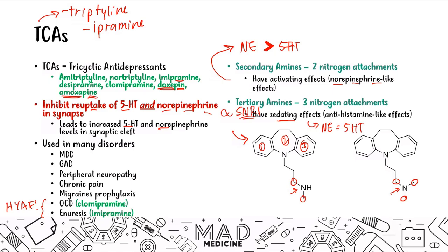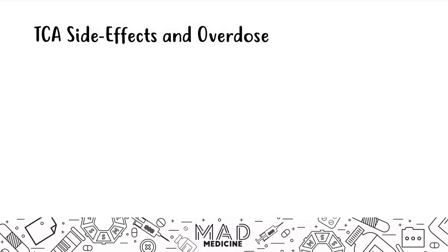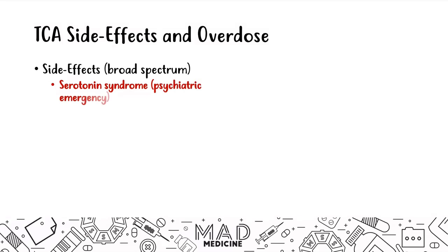TCA side effects are very broad spectrum because they have multiple effects on the body. The first side effect common to many antidepressants is serotonin syndrome, which is a psychiatric emergency. This is usually due to an increased amount of serotonin left in the synaptic cleft, especially if someone has a carcinoid tumor and is also taking serotonin reuptake inhibitors or TCAs.